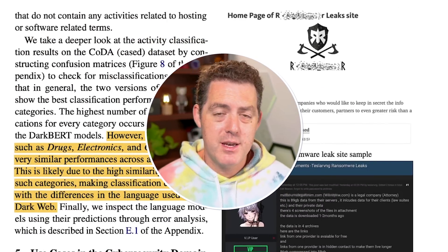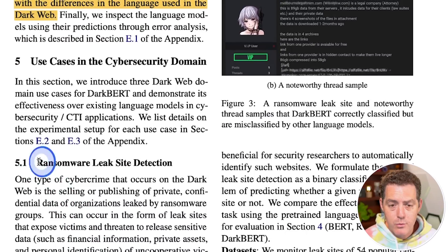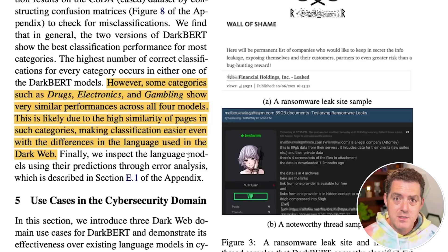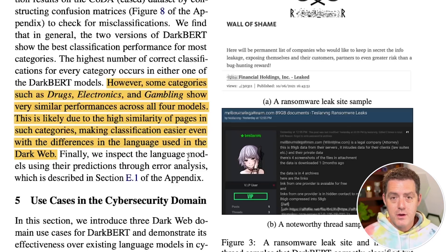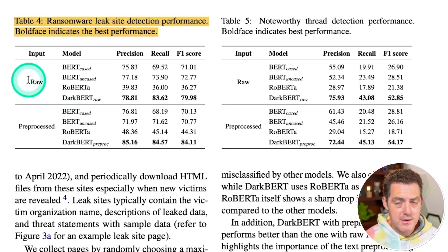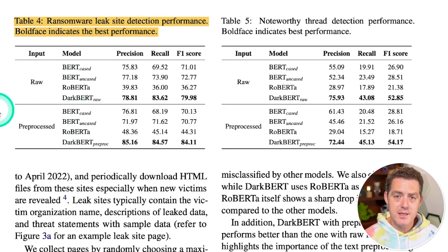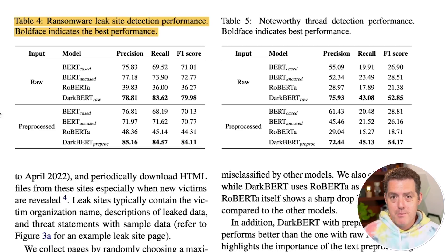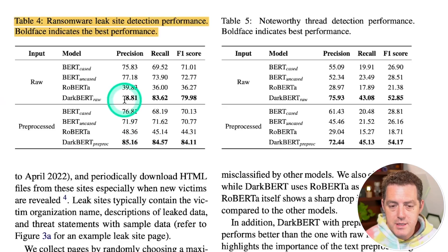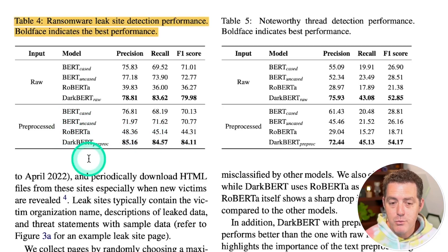One key use case is ransomware leak site detection. The model, while crawling, can also identify leak sites — this is valuable because the dark web is huge and people are trying to automate identification of malicious material. Results show DarkBERT, especially on pre-processed data — with low-volume, empty, and private data categories removed — far outperformed RoBERTa and BERT, which are trained on surface web data.